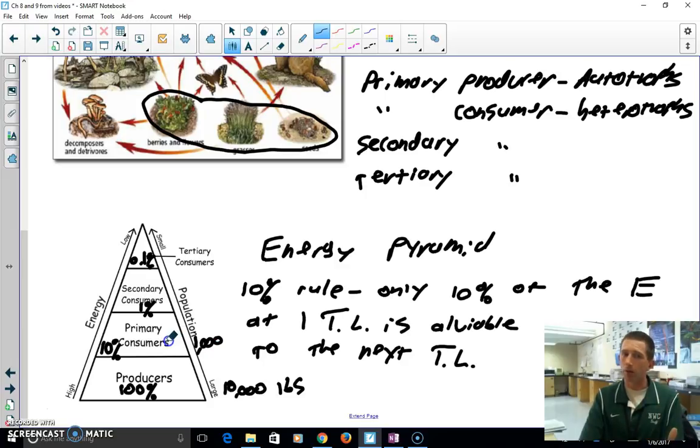Okay, well, how many bears or how many pounds of bear would we get from those 1,000 pounds of deer? Well, we would only get 100 pounds of bear. And then it tops out because the red-tailed hawks don't eat the bear.